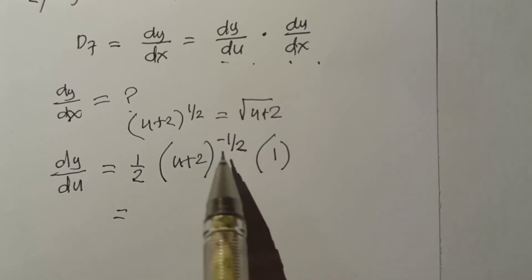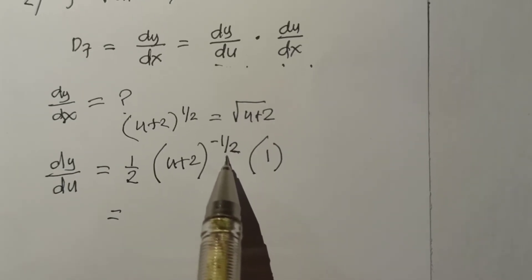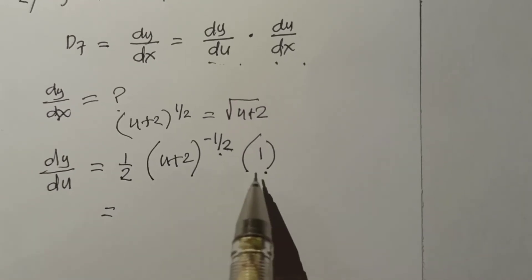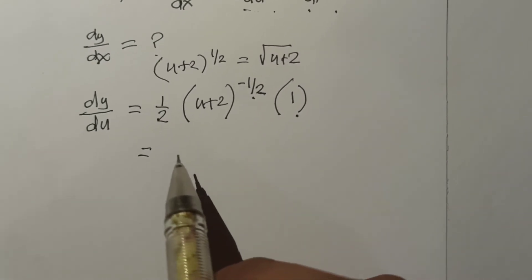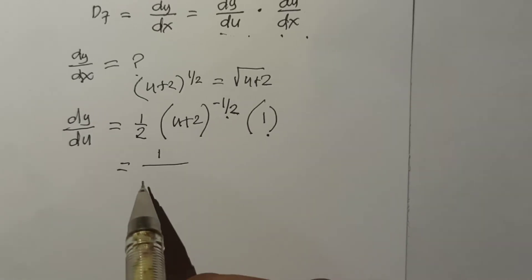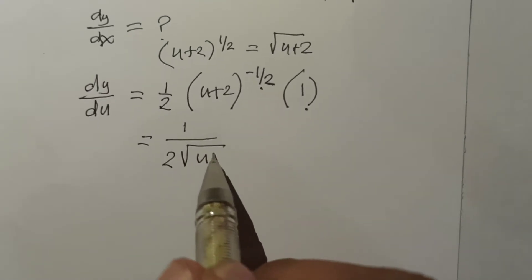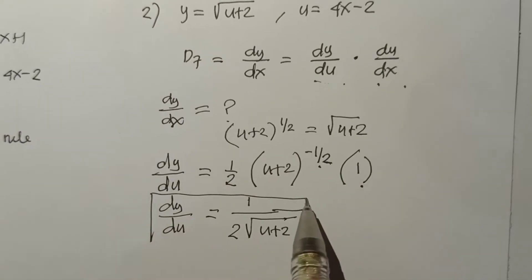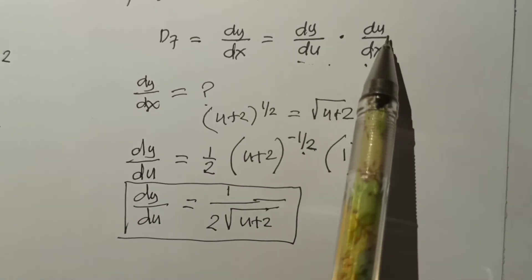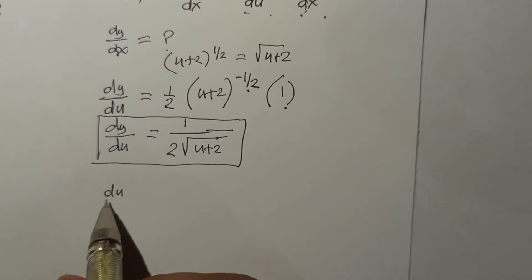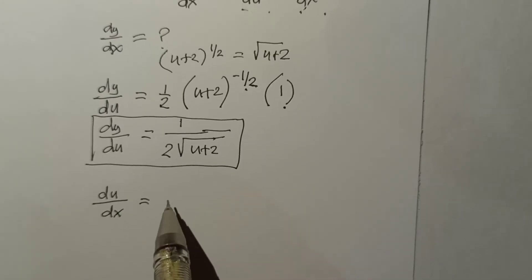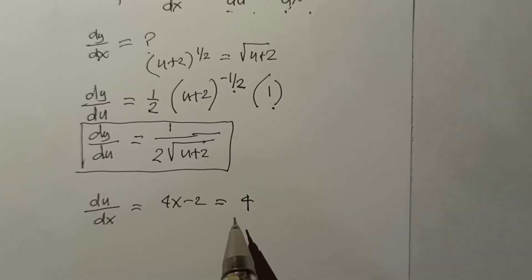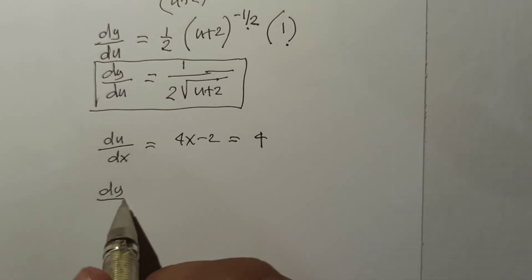This simplifies to 1 over 2√(u + 2). Then we find the derivative of u with respect to x: since u = 4x − 2, the result is 4. Now we multiply: dy/dx = [1 / (2√(u + 2))] × 4.